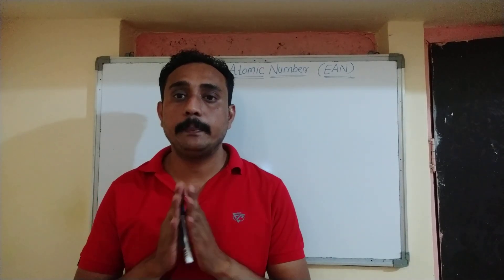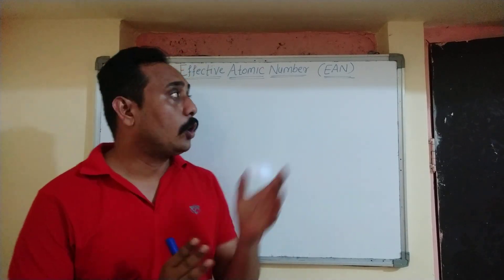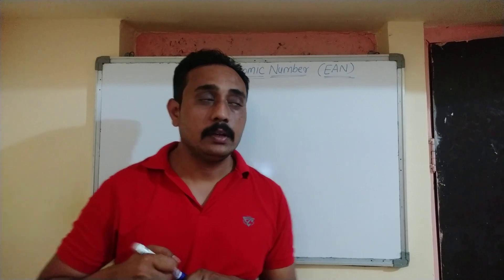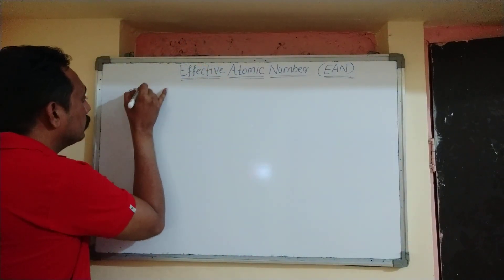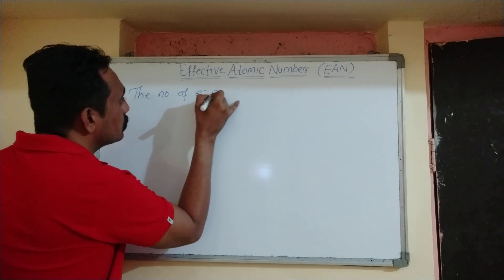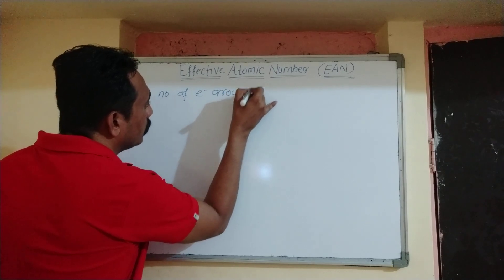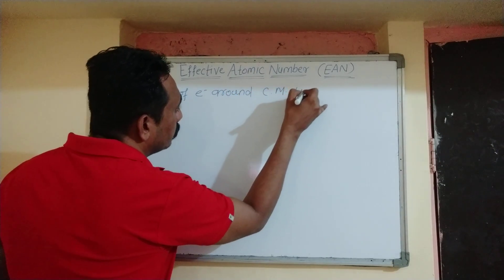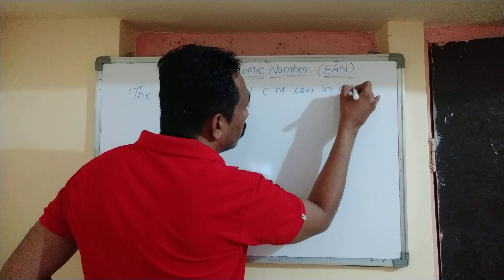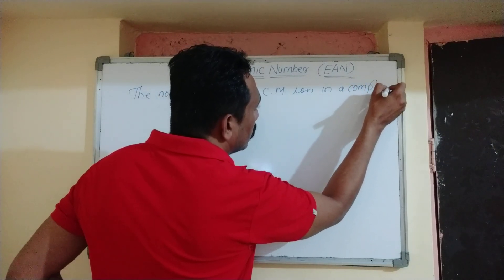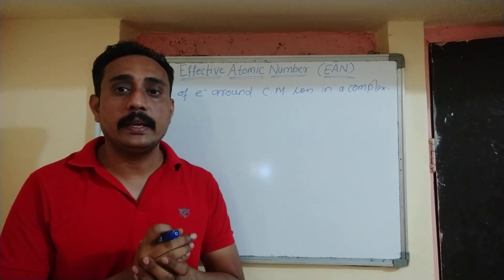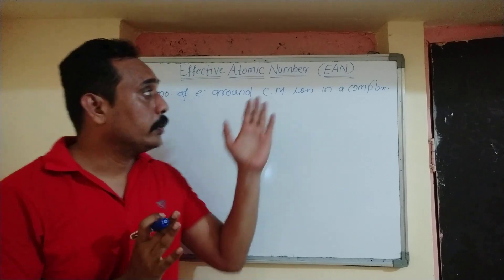Hello students. In today's video we will see Effective Atomic Number. The topic is from the chapter Coordination Compounds, class 12. The Effective Atomic Number is the number of electrons around the central metal ion in a complex. We call it Effective Atomic Number.